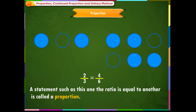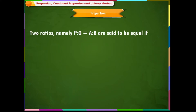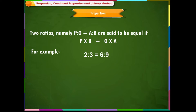A statement such as this, where one ratio is equal to another, is called a proportion. Two ratios p:q and a:b are said to be equal if p × b is equal to q × a. For example, 2:3 is equal to 6:9 because 2 × 9 equals 3 × 6, which equals 18.